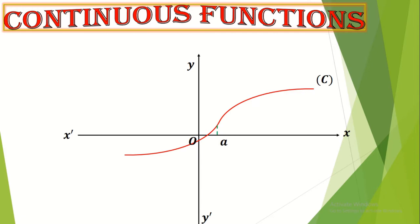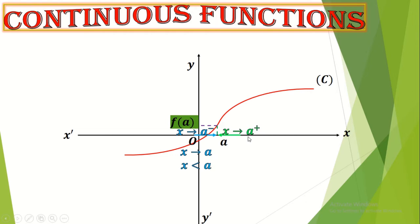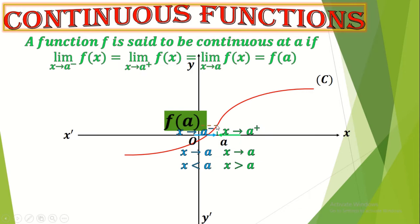When do we say that a function is continuous at a point A? In an orthonormal system, we have the curve C, the representative curve for a function. We have a point A. We say this function is continuous at point A if: as x tends to A minus (x tends to A and x is less than A), f(x) tends to f(A); and also as x tends to A plus (x tends to A and x is greater than A), f(x) also tends to f(A). So a function is continuous at point A if the limit as x→A⁻ of f(x) equals the limit as x→A⁺ of f(x), equals the limit as x→A of f(x), and equals f(A).